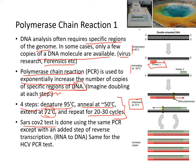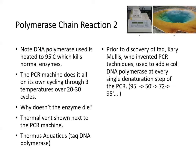SARS-CoV-2 is also detected using the same PCR reaction, except with an added step of reverse transcription, because SARS-CoV-2 is an RNA virus, just like HCV. Note the RNA polymerase is killed because it's a protein at 95 degrees. Why does egg white turn white? Because proteins denature. So if the PCR machine cycles through three different temperatures for 20 to 30 cycles, why doesn't the enzyme die?